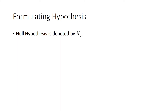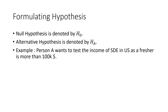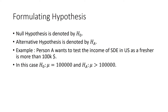The first step is formulating the hypothesis, where the null hypothesis is denoted by H0 and the alternative hypothesis is denoted by H1. For example, person A wants to test whether the income of a software development engineer in the United States as a fresher is more than $100,000 per year. In that case, H0 (the null hypothesis) is mu equal to $100,000, and the alternative hypothesis is mu greater than $100,000, because the person is testing if the salary is more than that.